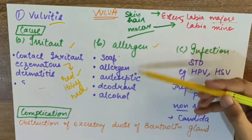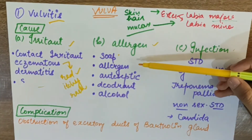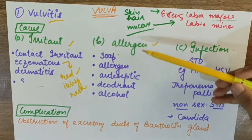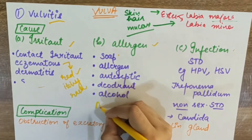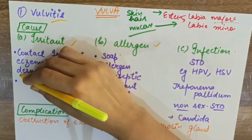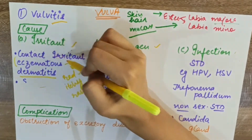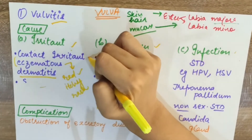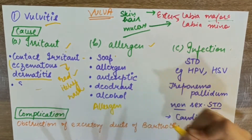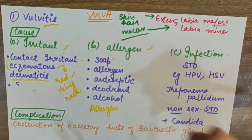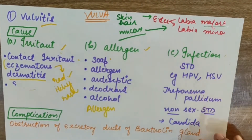When the cause is an allergen rather than an irritant, we call it allergic dermatitis. So there are two types: irritant eczematous dermatitis and allergic dermatitis. The third cause of vulvitis is infection, which can happen with many things.